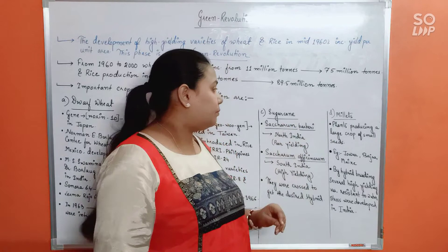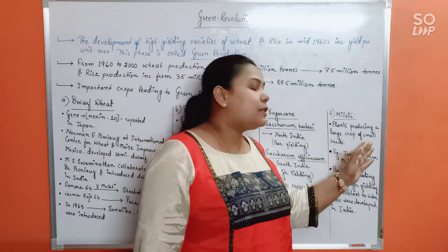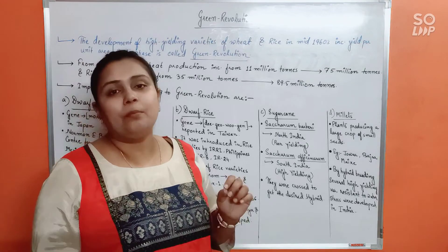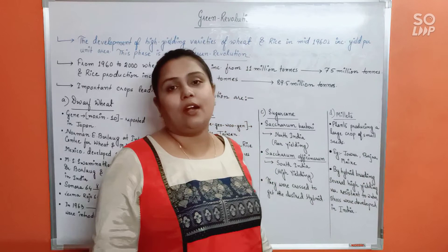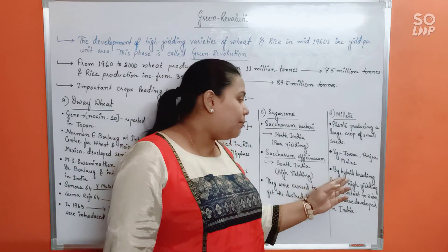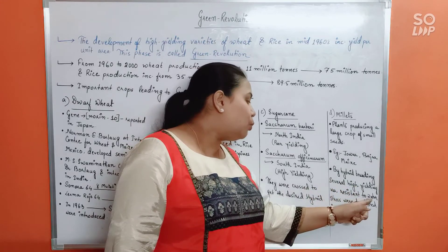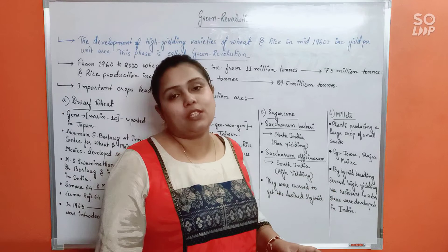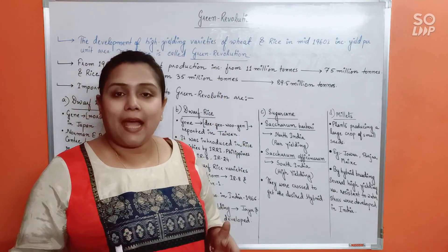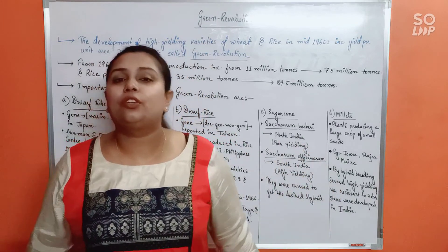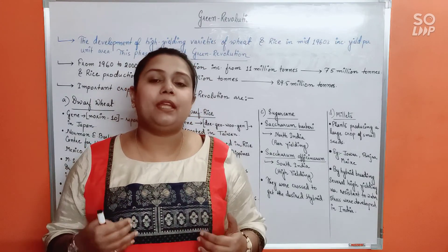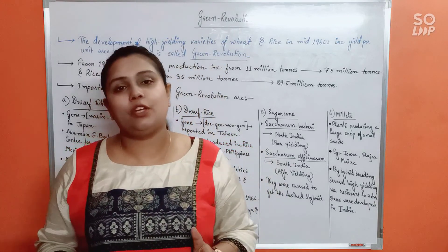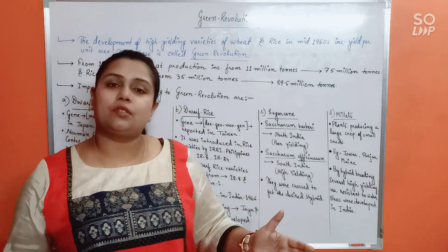Finally: millets. Plants producing a large crop of small seeds are known as millets — for example, Jowar, Bajra, and Maize. In India, by hybrid breeding, high-yielding varieties of millets that are resistant to water stress and can grow with less water were produced, thereby reducing irrigation costs. These varieties also led to higher millet production in India. These are the important crops introduced and developed in India that enhanced food crop production and contributed to the Green Revolution.